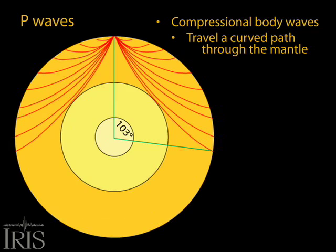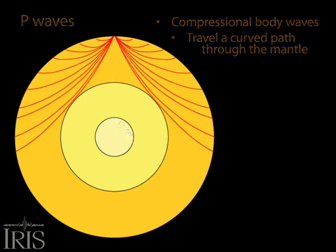Seismometers farther than that will record changes from other waves as the wave encounters the crust and boundaries between the mantle, outer and inner core.